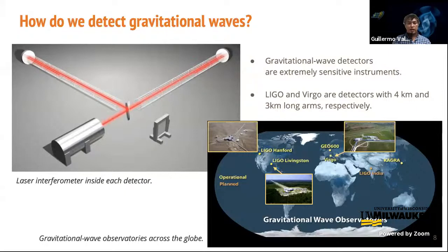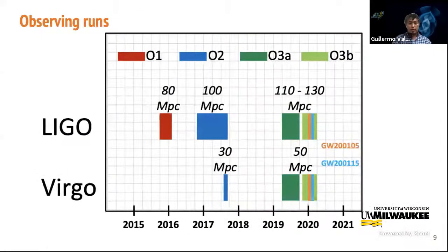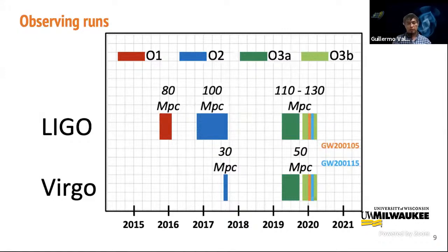LIGO and Virgo have been conducting three major observing runs so far, named O1, O2, and O3. O3 was split into two parts: O3a, which lasted until October 2019, and O3b, from November 2019 until March 2020. All the observations Astrid described were made in O1, O2, and O3a. Here, we are reporting the first results of O3b.